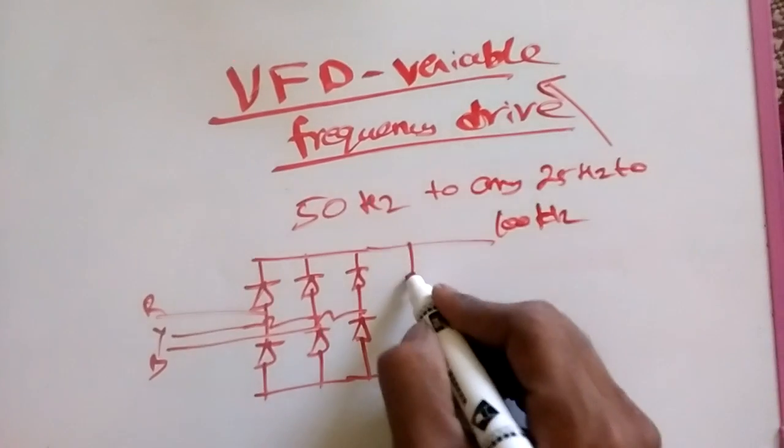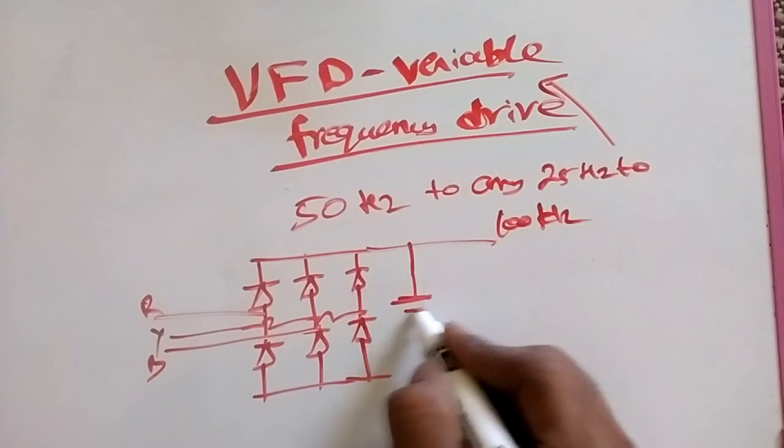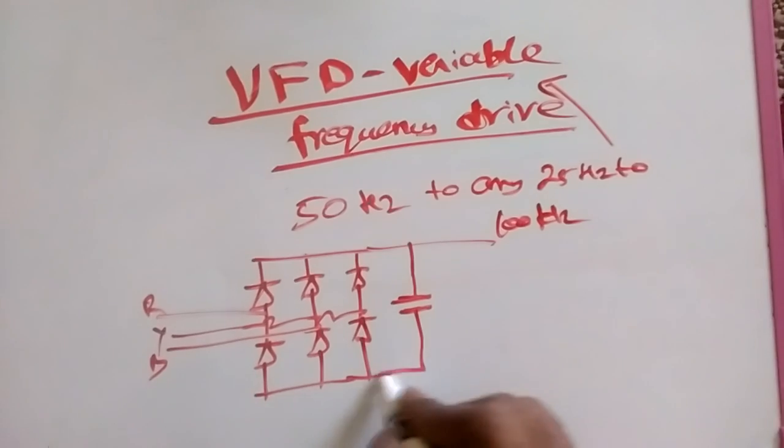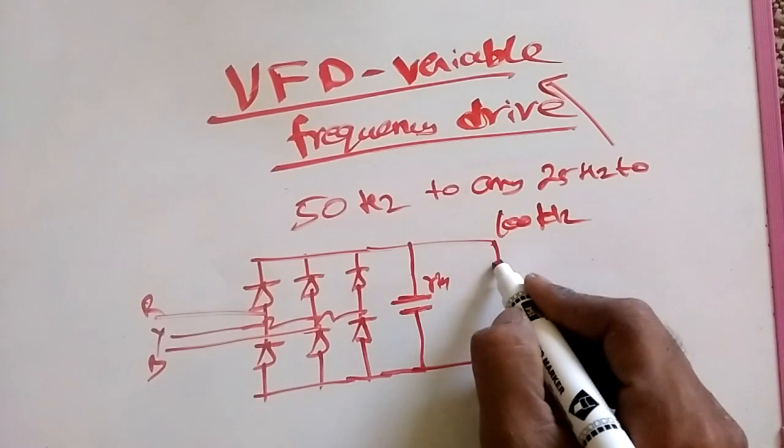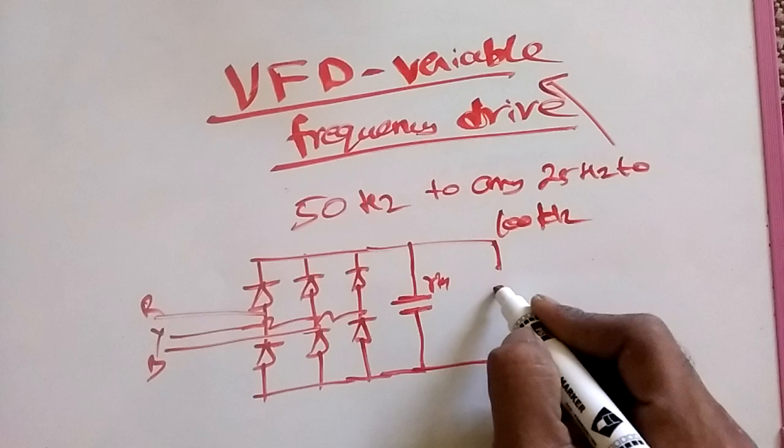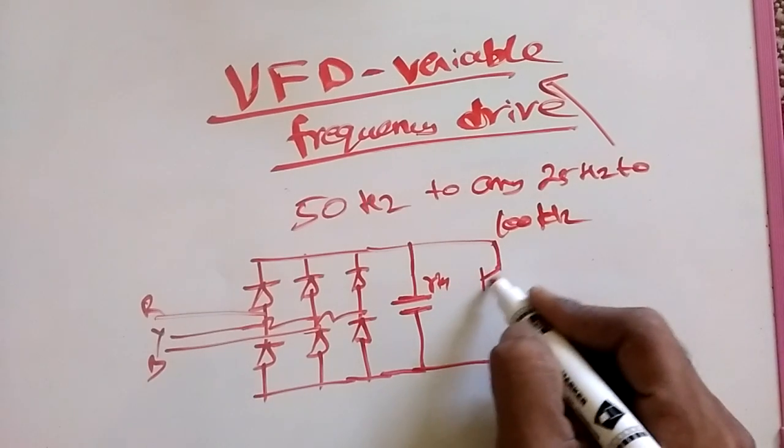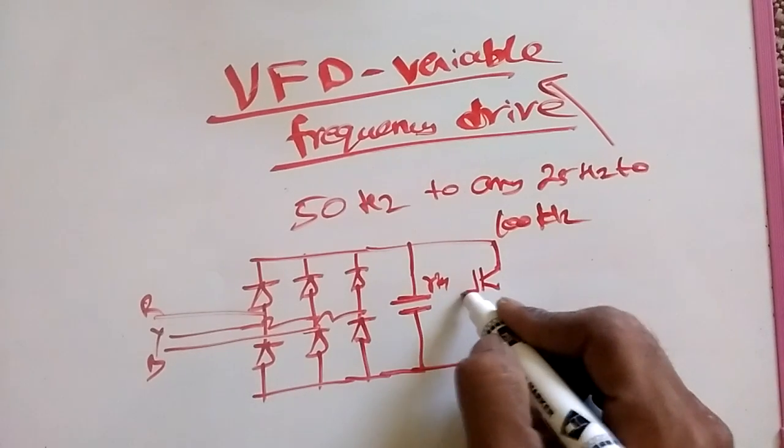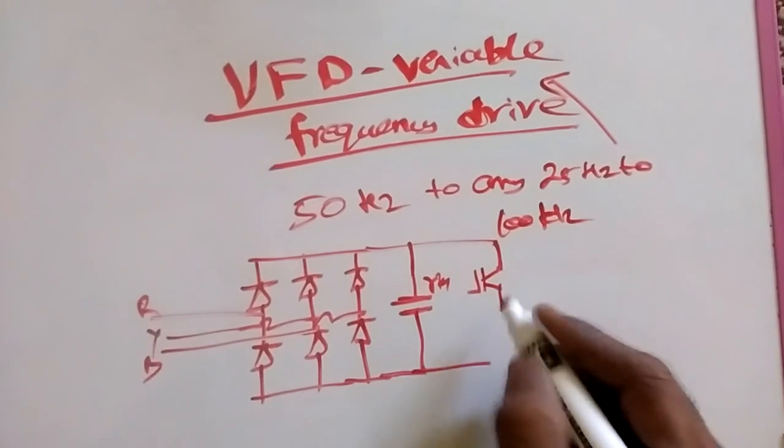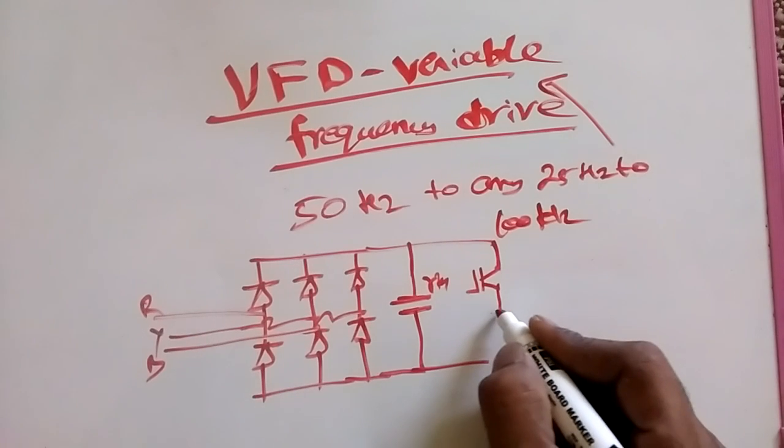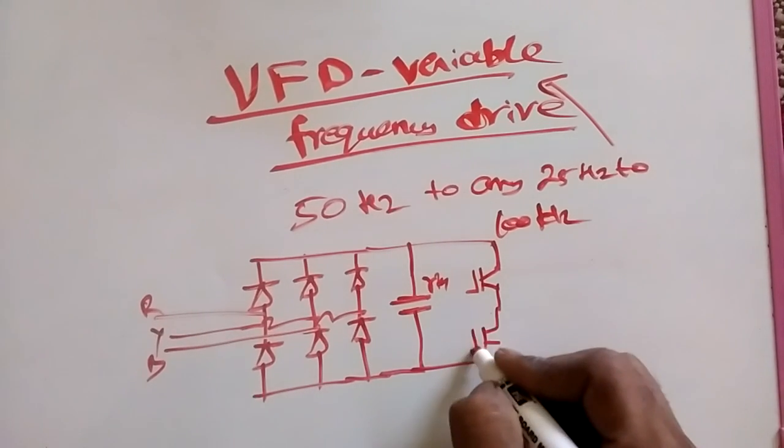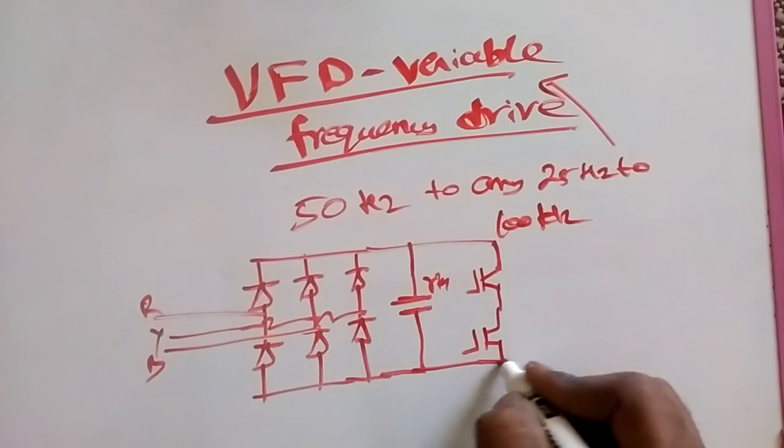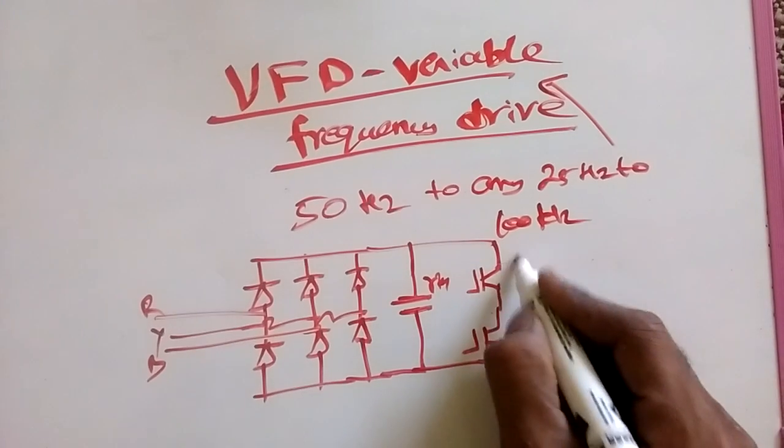Then we are going to rectify the ripples by using this capacitor, ripples capacitor. Then we are going to use any of the transistor families like MOSFET or FET or BJT. These are any of the transistors we are going to use to change the voltage from DC to AC.